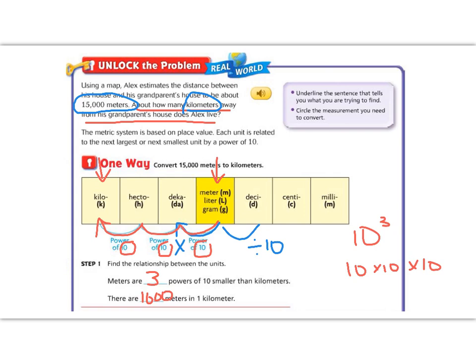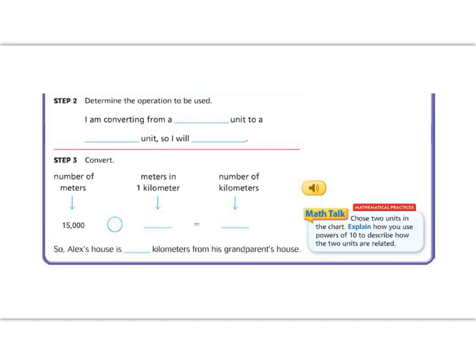Make sure you have all this written down because step 2 is on my next slide. Step 2, determine the operation to be used. Well, I am going from meter to kilometer, which we just saw was bigger. So I am going from something smaller to something larger, which means that I am going to divide.